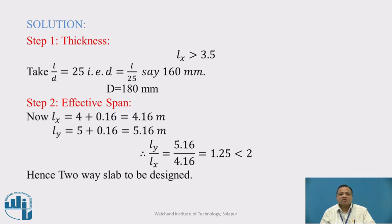Second step: find the effective span. Effective span is equal to clear span plus effective depth. It is 4 plus 0.16 in X direction equals 4.16. Similarly in Y direction, 5 plus 0.16 equals 5.16. Then find the ratio of longer span to shorter span, Ly by Lx equals 5.16 by 4.16 equals 1.25, which is less than 2. Hence we are supposed to design a two-way slab.